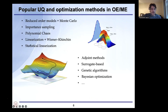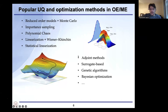Popular UQ and optimization methods in mechanical and ocean engineering include statistical linearization and surrogate-based methods, genetic algorithms, and Bayesian optimization — each with their own advantages and disadvantages.